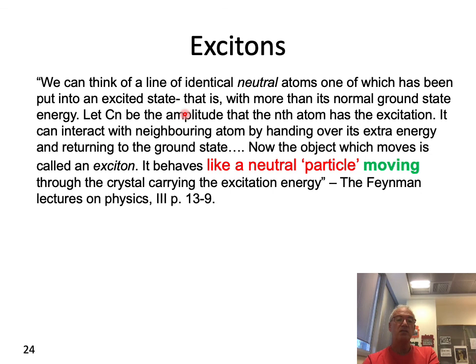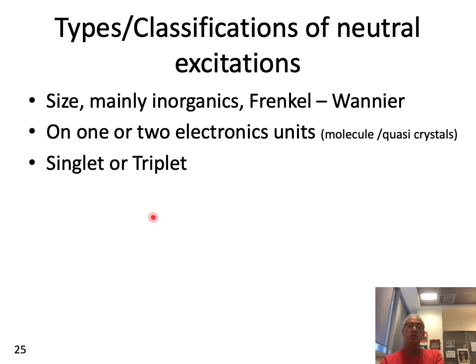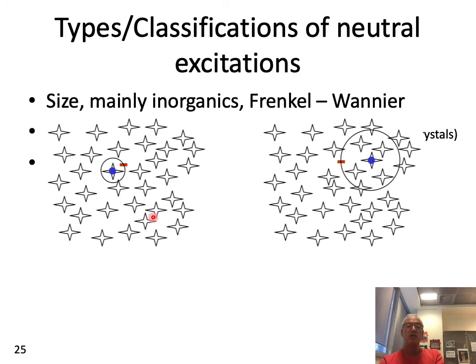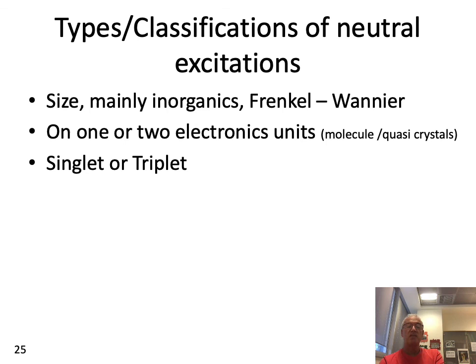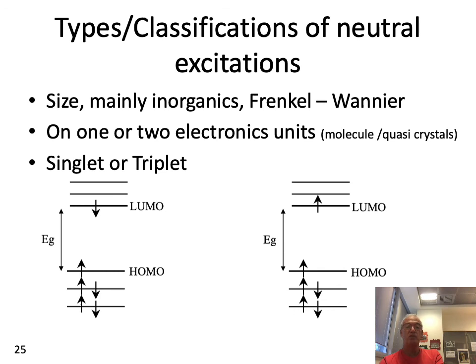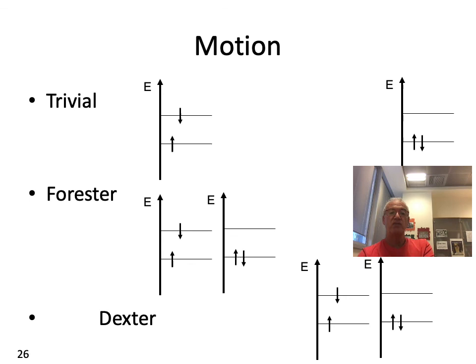To summarize what we've covered: excitons are neutral and we've seen several classifications. We covered the organic classification, then the inorganic classification of tightly bound and extended excitons, then intra- and inter-chain excitons, and finally classification by spin. We then looked at three energy transfer mechanisms: the trivial one involving photon emission and absorption, the Förster energy transfer based on dipole-dipole interaction in the near field, and the Dexter exchange mechanism.